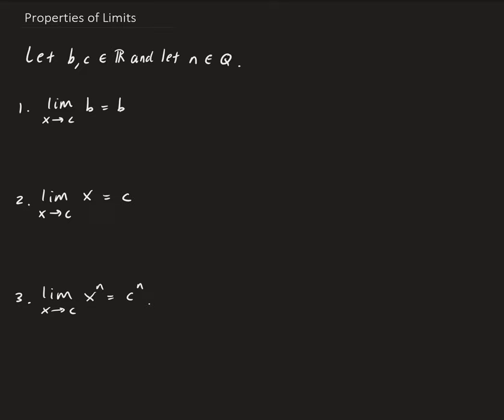The first property is that the limit of a constant for whatever x is approaching is always going to be that constant. So an example would be: if you have the limit as x is approaching 5 and the constant function is, let's say, pi, then this is going to give us the value of pi.